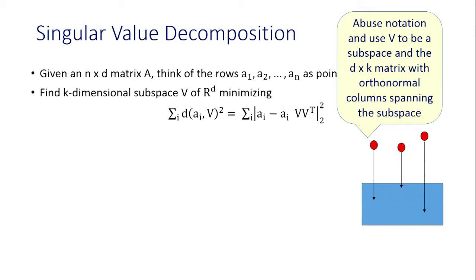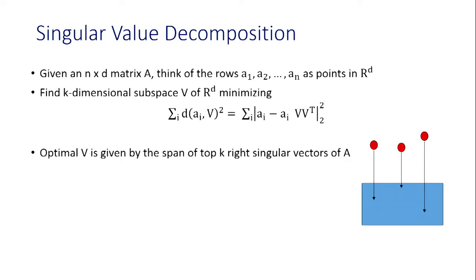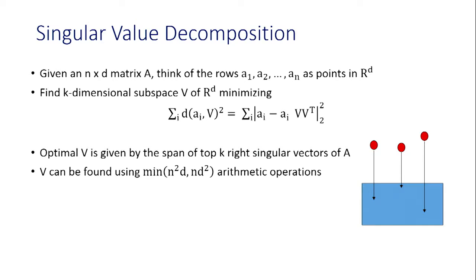I'll abuse notation throughout the talk. I'll use V both for the k-dimensional subspace and also as a d by k matrix with orthonormal columns, so that VV^T is the projection onto V. I'm looking at the sum of squares of distances from a_i to a_i VV^T. The optimal V is given by the top k right singular vectors of A, i.e., the top k principal components. Naively, using SVD, you can compute this in min(n²d, nd²) arithmetic operations. Using fast matrix multiplication, in theory you can do better.